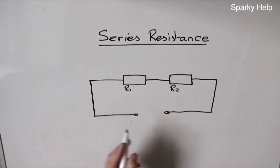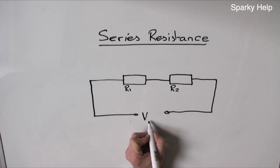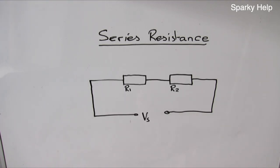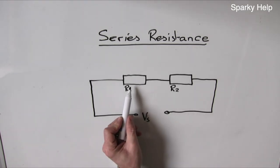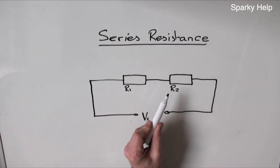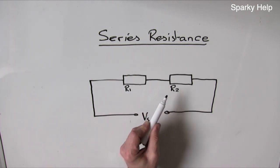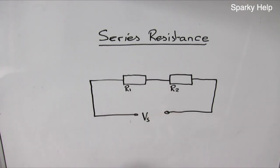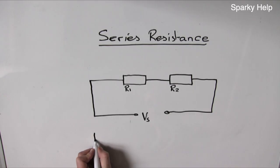In order to push that current round, you would need a voltage, which would be supplied here. It makes no odds whether it is AC or DC. So when we add resistance in series, it will only go up. The total resistance of the circuit is always going to increase, no matter what you add in circuit.